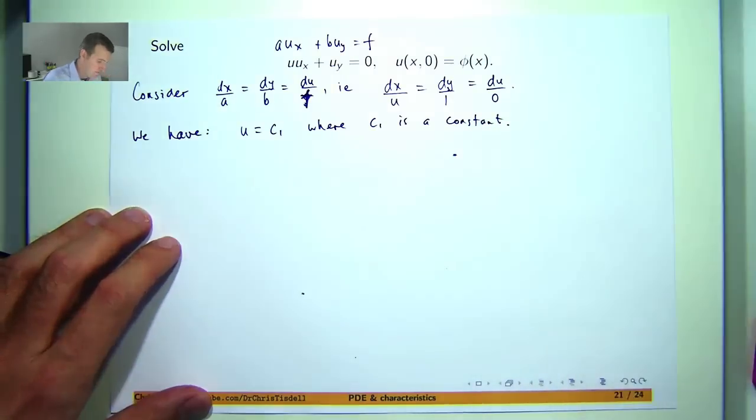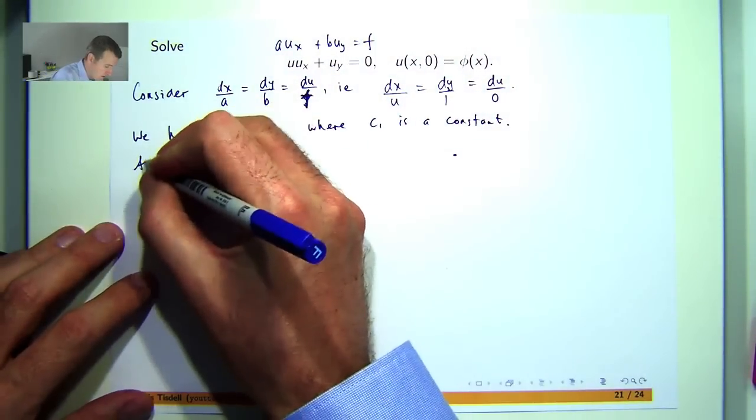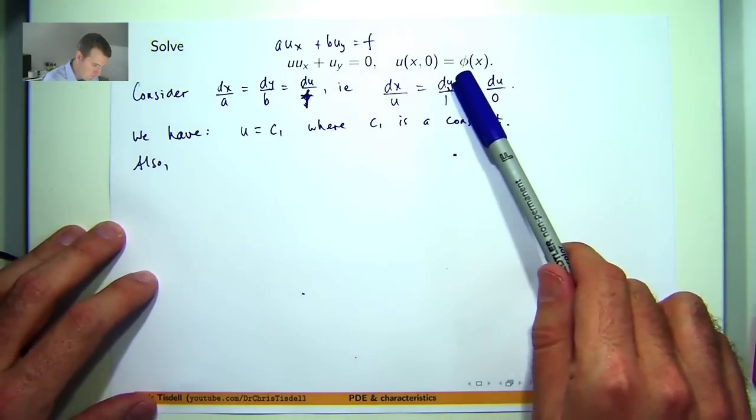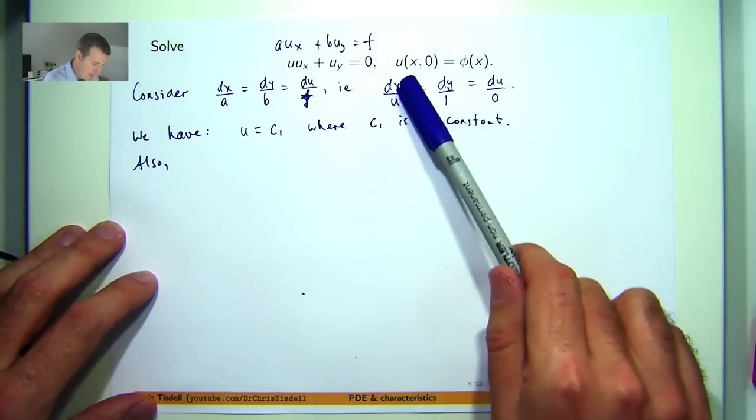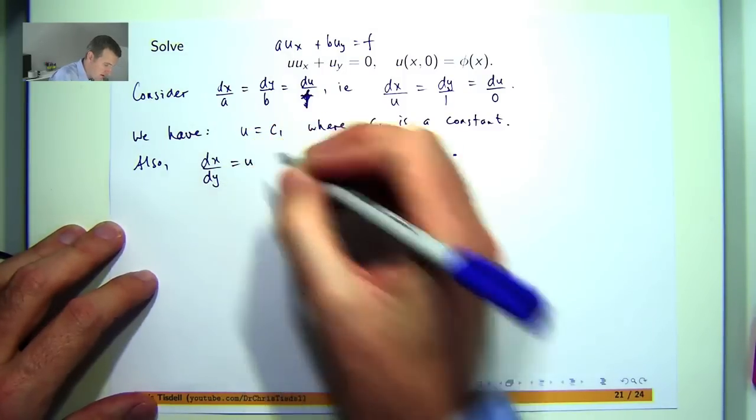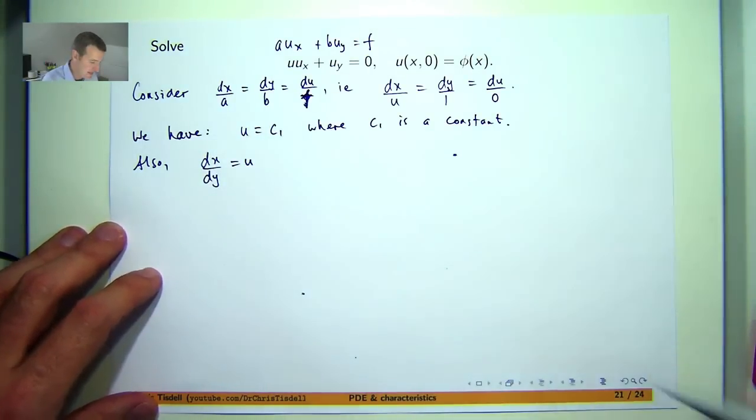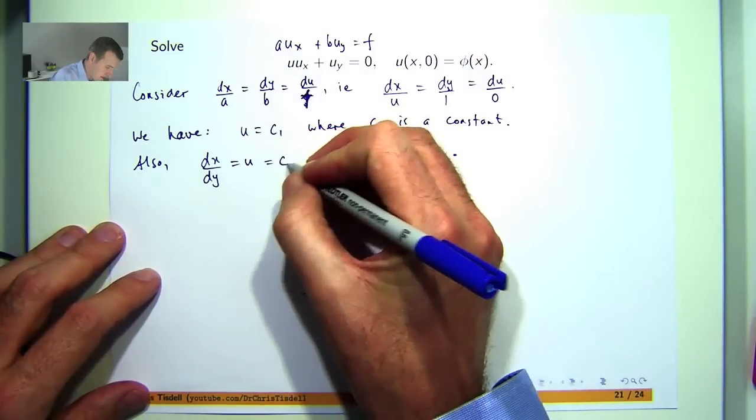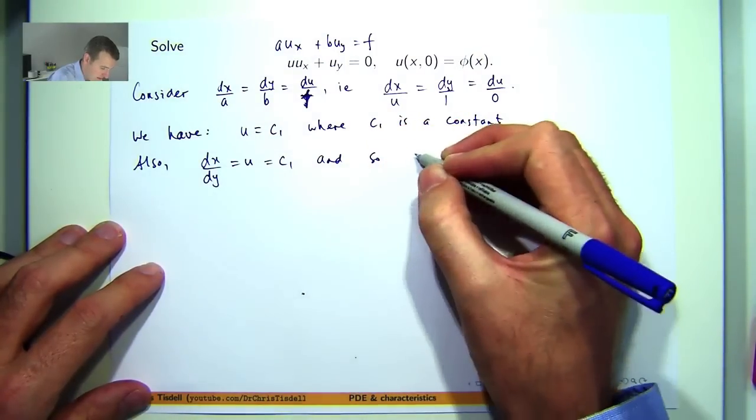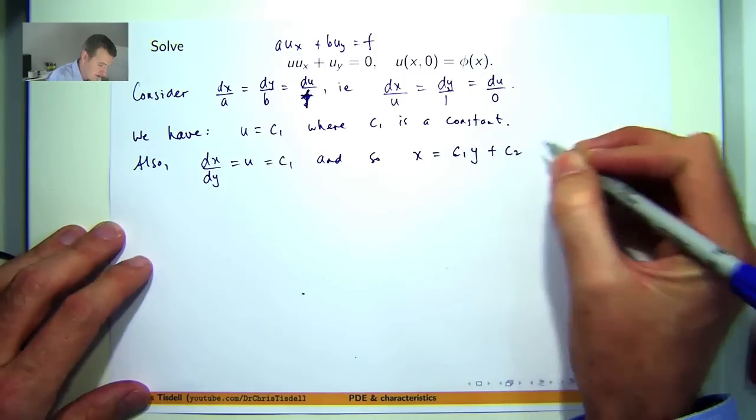So let's combine these differentials to form an ODE. So let's combine them to be say dx over dy equals u. Now you might think well how do I solve that, I don't know what u is. But you know what, from here, u is a constant. So if we integrate here now, x is just going to be c1y plus another constant of integration say c2.